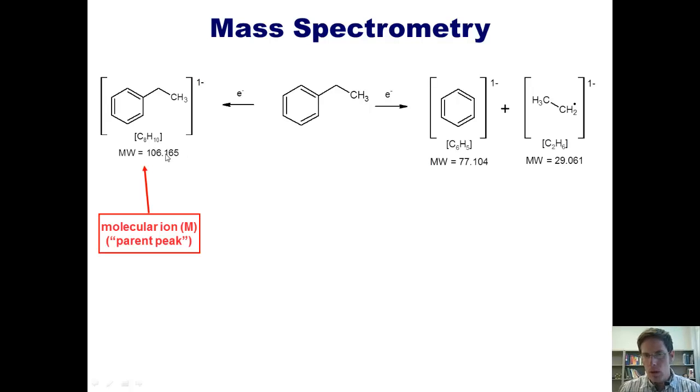It would be even more common for us to see our starting material get dissected by electron bombardment into these two fragments. The reason for this is because this fragment right here is a benzyl radical, which is the most stable of all of the fragments shown on this slide, because this electron can be delocalized by resonance into the benzene ring. This radical would give us a mass peak at 91, while the fragmented methyl radical would give us a mass peak at 15.